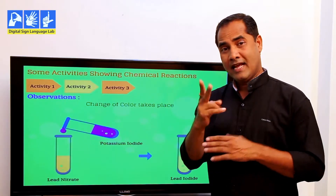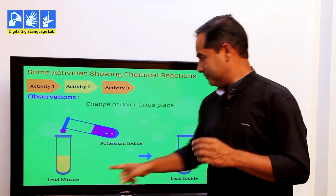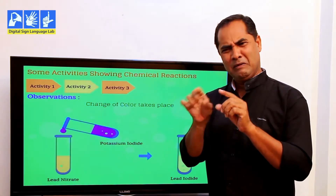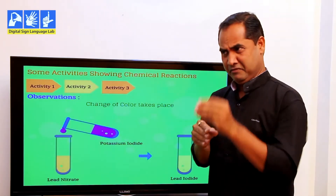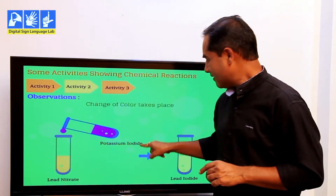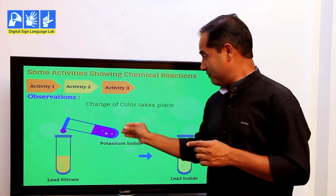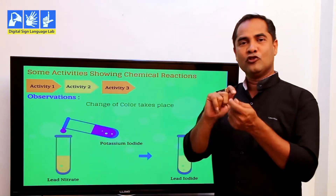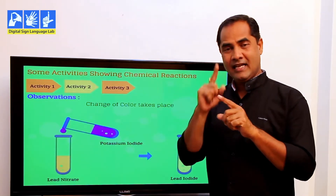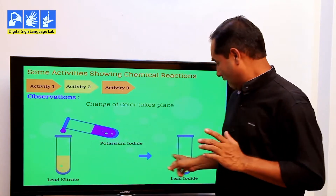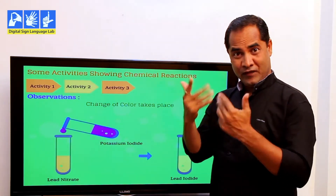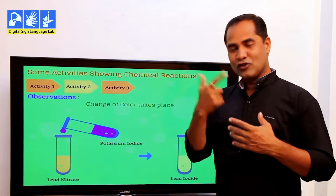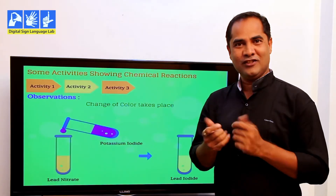Now see activity two. That's lead nitrate — it's one kind of chemical. Another chemical: potassium iodide. When you add potassium iodide to lead nitrate, it changes into lead iodide. When you mix those two chemicals, a color change happens. And that's a chemical reaction.